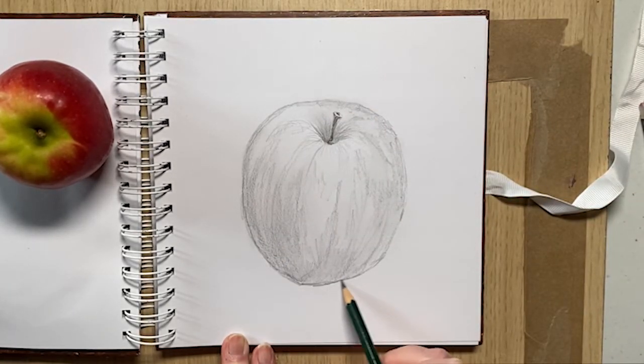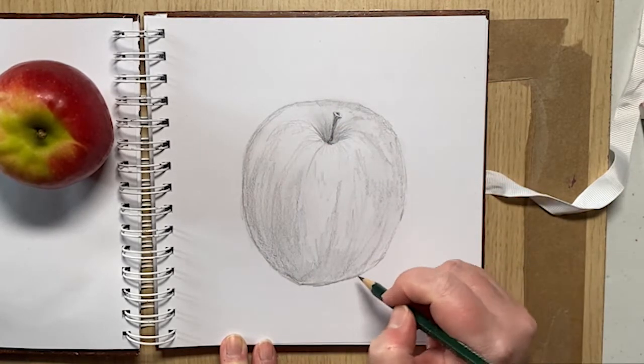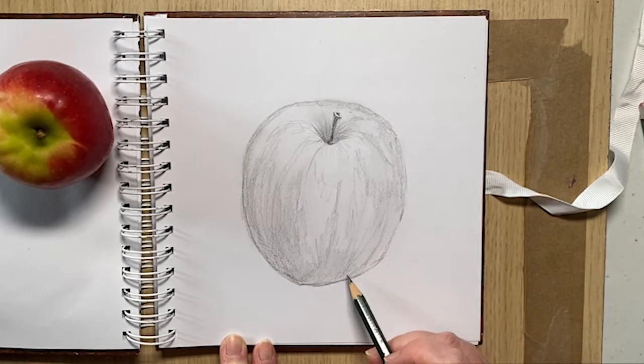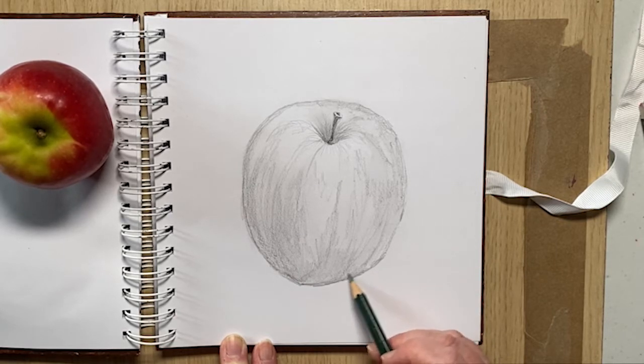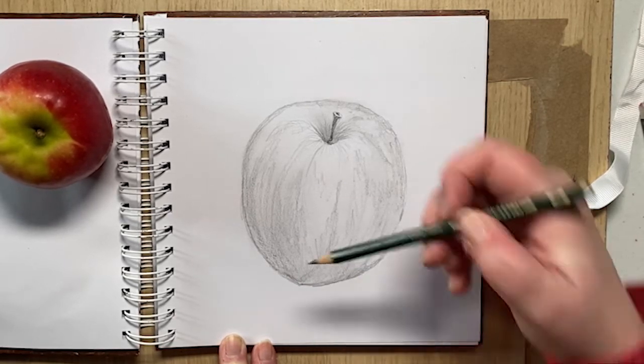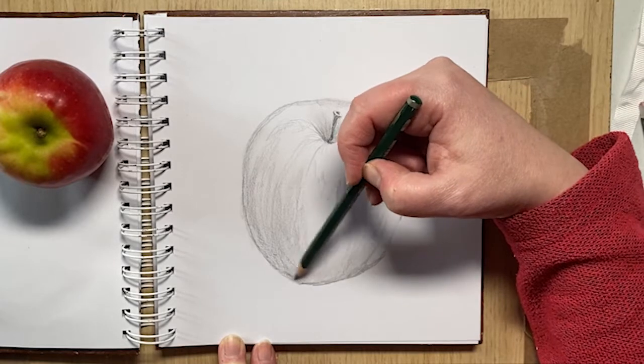So try and avoid getting a very dark sort of line on the outside of it, because you don't want it to look like it's drawn around. And just very lightly blend any darker shaded areas like the bottom, for example.